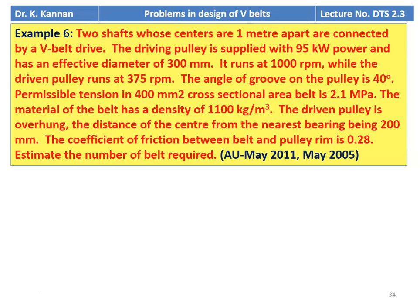Example number 6, appearing in May 2011 and May 2005. Two shafts whose centers are 1 meter apart are connected by a V-belt drive. The driving pulley is supplied with 95 kW and has an effective diameter of 300 mm, running at 1000 RPM. The driven pulley runs at 375 RPM. Groove angle is 40°. Cross-sectional area of belt is 400 mm² with permissible stress 2.1 MPa, belt density 1100 kg/m³. The driven pulley is overhung, with center-to-nearest-bearing distance of 200 mm. Coefficient of friction is 0.28. Estimate the number of belts required.